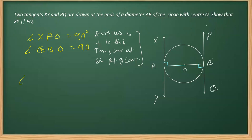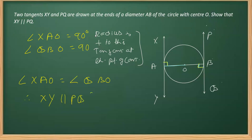Since angle XAO equals angle QBO, and each is 90 degrees, these are alternate interior angles. Therefore, XY is parallel to PQ. The reason is that alternate interior angles are equal, which proves that the two tangent lines are parallel.